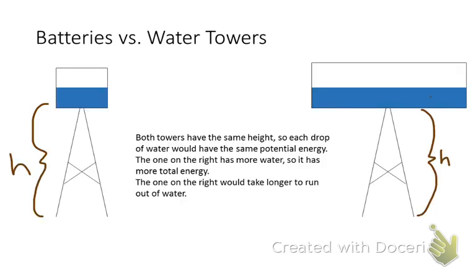So here's an analogy. I have two water towers here. Both water towers have the same height. So every single individual drop of water, there's one drop of water in that tower, and then here's one drop of water in the other tower. Each individual drop of water would have the same amount of energy. And so the height tells us basically the energy per drop, but the tower on the right has more drops of water in it. So it would take longer to run out of water, or it would take longer to run out of energy. So height is kind of analogous to voltage or electric potential.